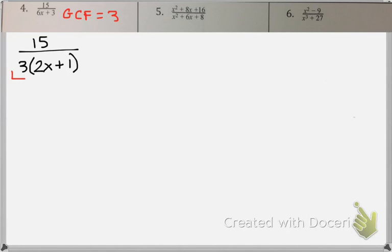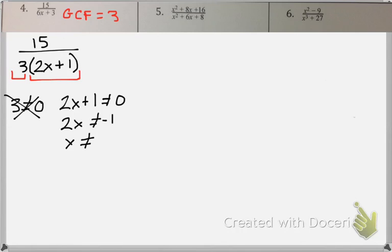Now I can take each factor and say that it can never equal 0. Well, 3 never equals 0 anyway, so you don't really have to worry about that. 2x plus 1 can never equal 0. So I know that x cannot equal negative 1 half. That's my restriction.